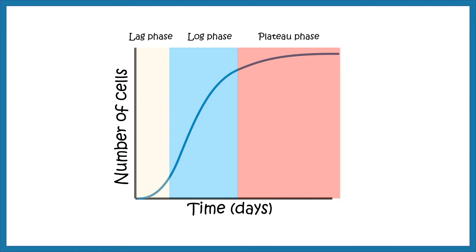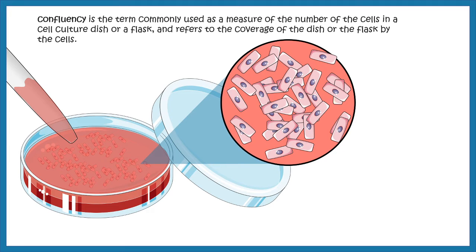When a cultured cell reaches the plateau phase, it is termed confluent. Confluency is commonly used as a measure of cell numbers — specifically, cell surface area versus the surface area of the culture dish — to get an idea of how crowded the cells are. If cells are too confluent, they won't get enough nutrients for growth, so you need to subculture them.